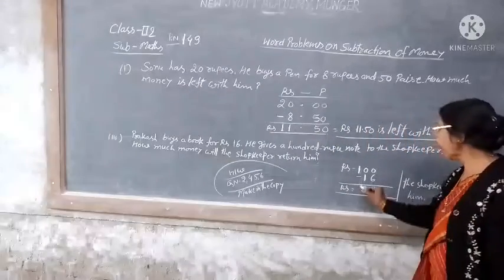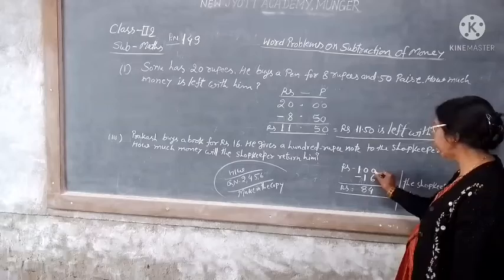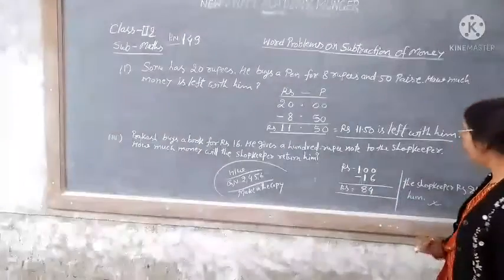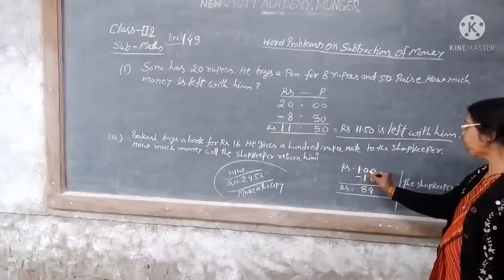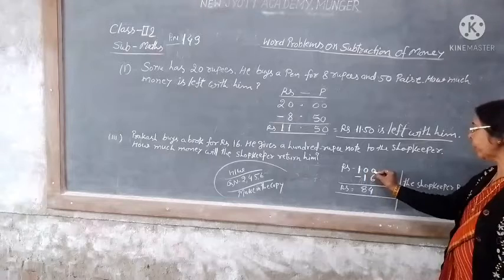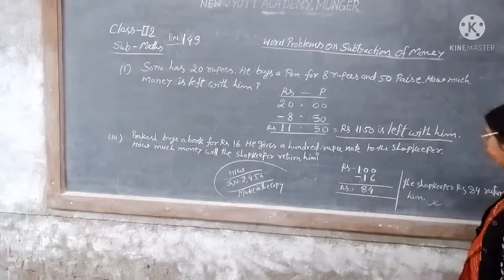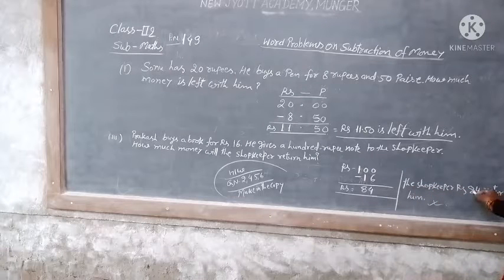We will minus the cost. So if we have got 100 minus 60, then we have got 84. I am going to write 84.